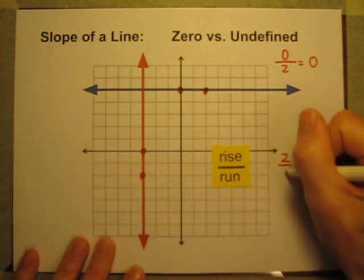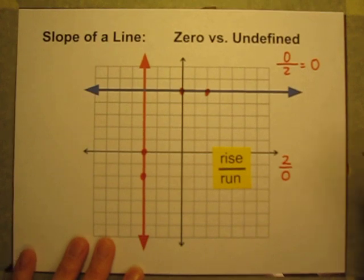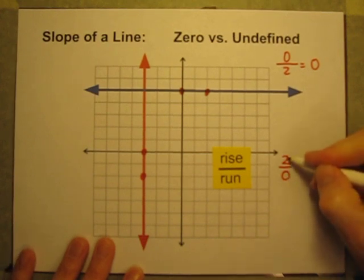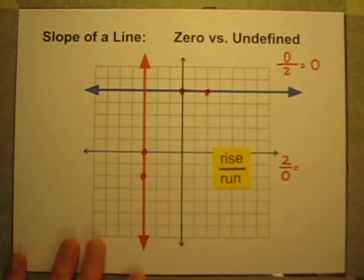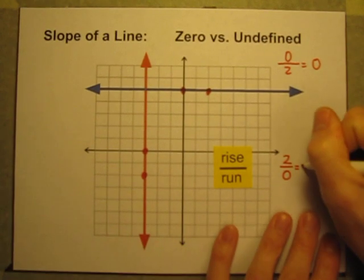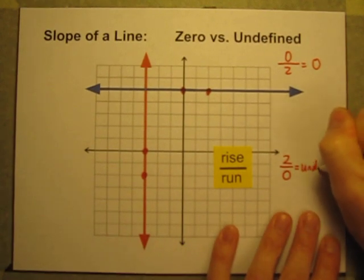Well, I don't have to go either way, right or left. So I just have a run of zero. The rise is two, the run is zero, and what kind of slope is that going to be? That is the slope that is undefined.